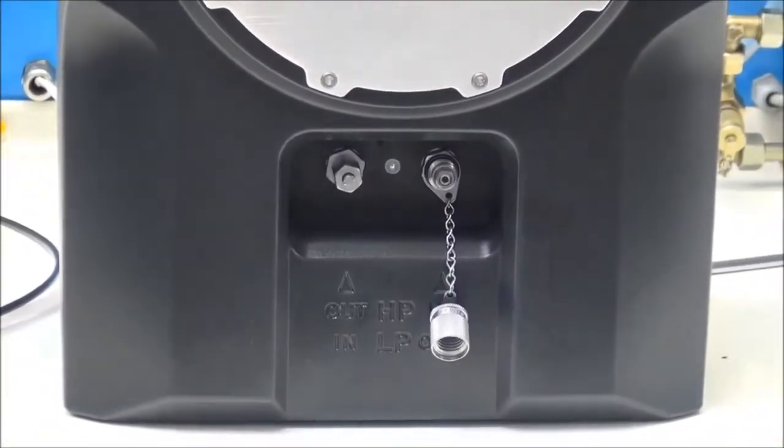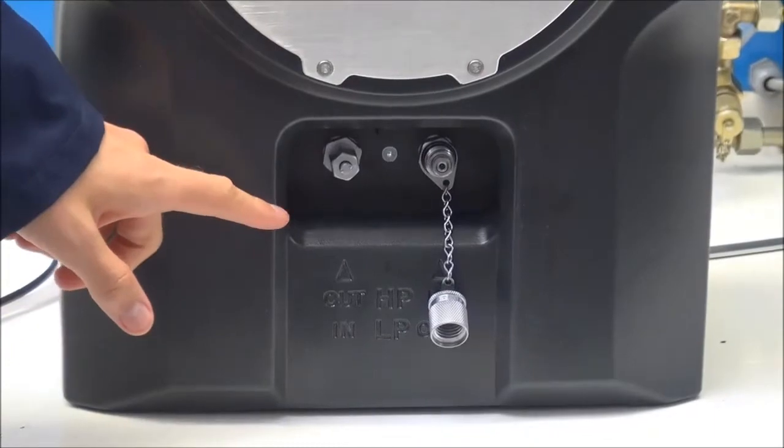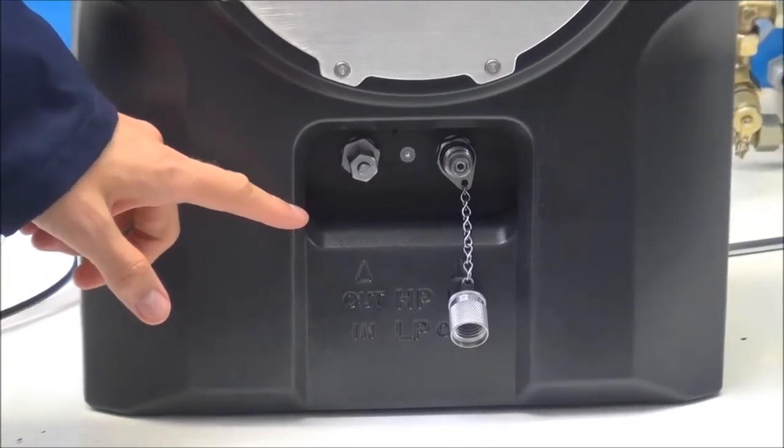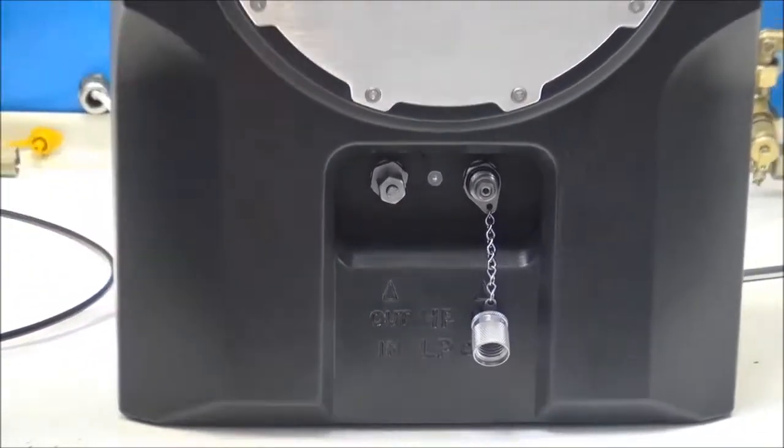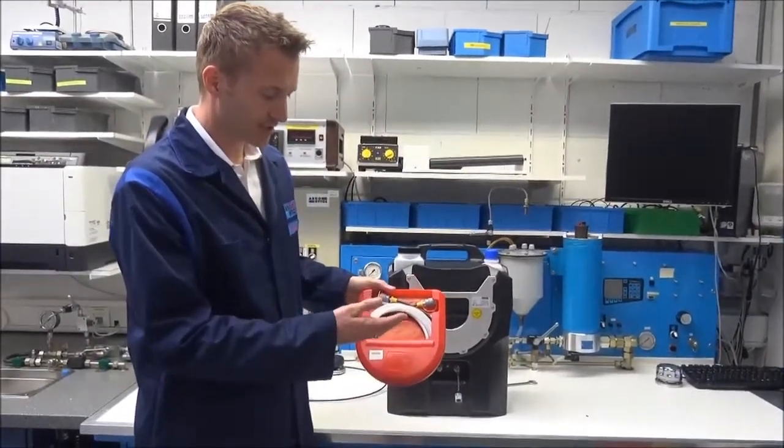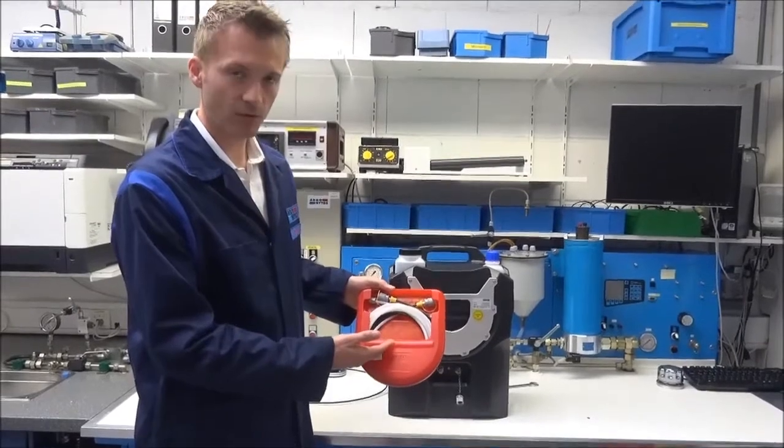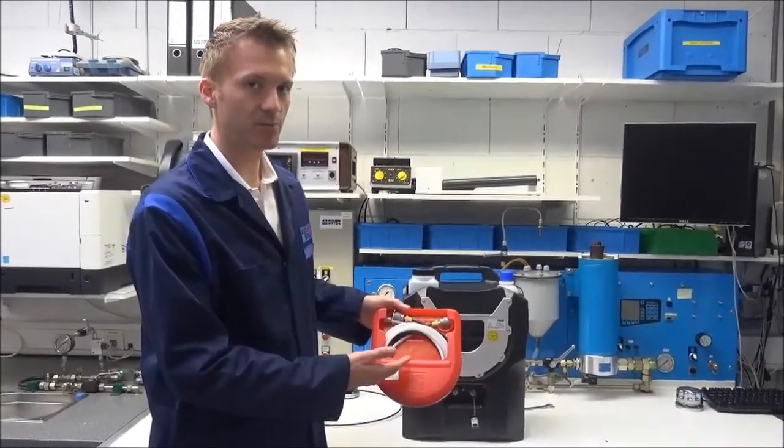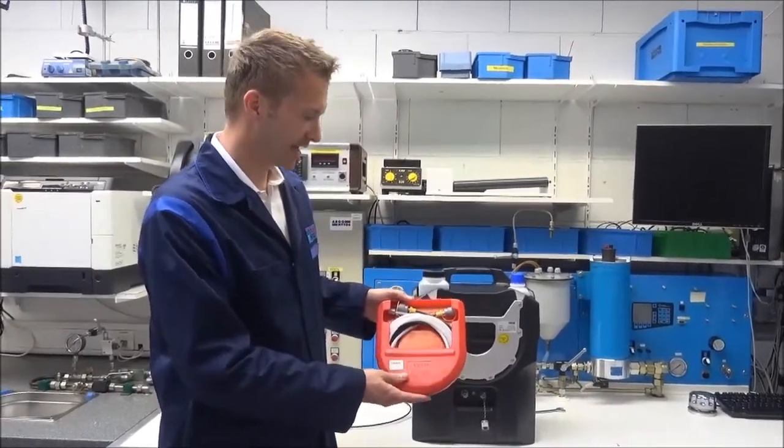When you look on the back side of the unit you see the inlet and outlet for high pressure and low pressure connection as well as a toolbox for the accessories. So the unit comes directly ready for use with all accessories and they can be stored directly at the unit.